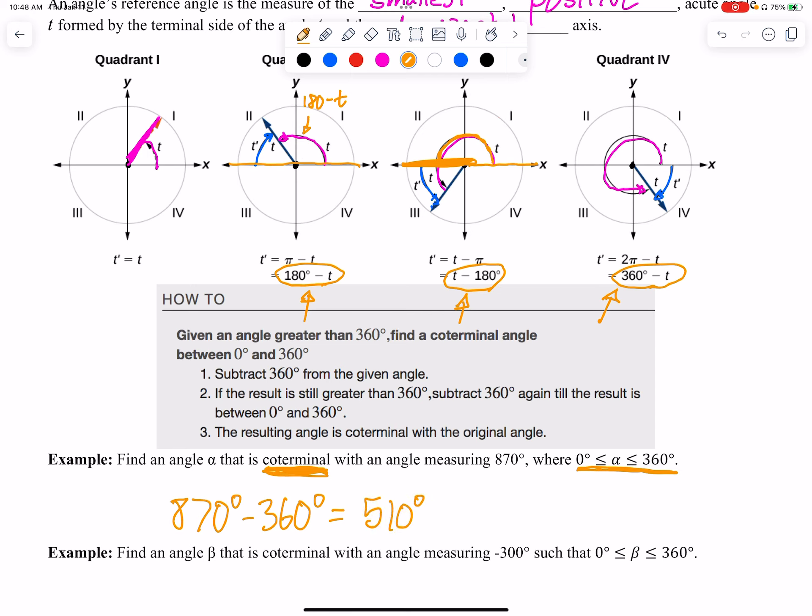Well, that's still not between 0 and 360°, so I'm going to take 510°, and I'm going to minus another 360°. All right, that's going to be 150°. So, the coterminal angle for 870° is 150°. They would land at exactly the same terminal ray. So, it would end at the exact same thing.